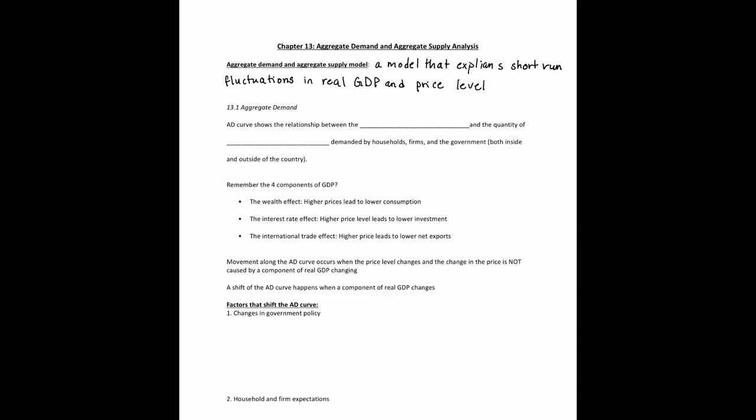The first thing we'll look at is the aggregate demand curve itself. The aggregate demand curve shows the relationship between the price level and the quantity of real GDP demanded by households, firms, and the government, both inside and outside of the country. Then we'll look at the short-run aggregate supply curve, which I'll refer to as SRAS.